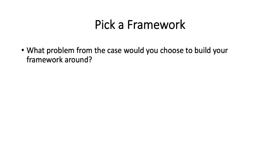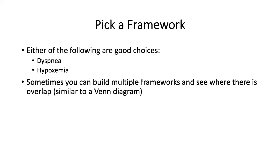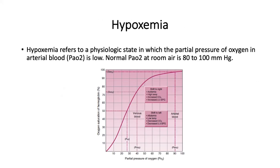Let's choose a framework to build our differential diagnosis around. Dyspnea would be a great choice; hypoxemia would be another. In complex cases with multiple problems, you can build multiple frameworks and see where the overlap is — like a Venn diagram, then focus on overlapping conditions. For this talk, we'll go with hypoxemia. Hypoxemia is a physiologic state in which the partial pressure of oxygen in arterial blood is less than 80 mmHg.